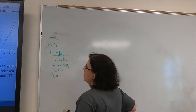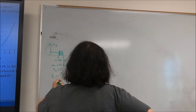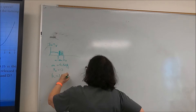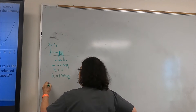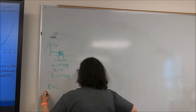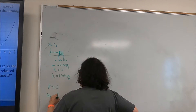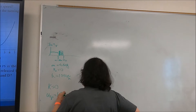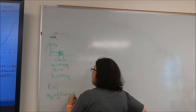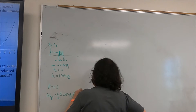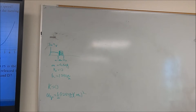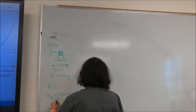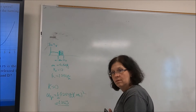The spring constant is 1250 N/m. Initially, the kinetic energy is zero and the spring potential energy is ½ × 1250 × (0.04)². Calculating: 0.04 squared times 1250 divided by 2 gives us one joule of energy.